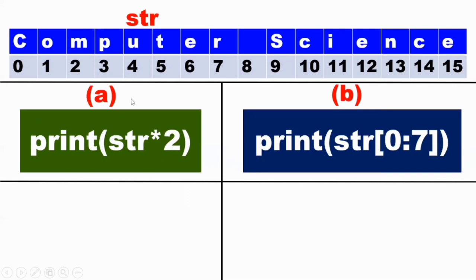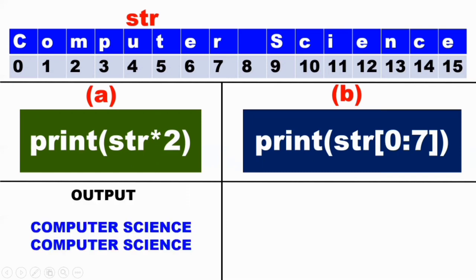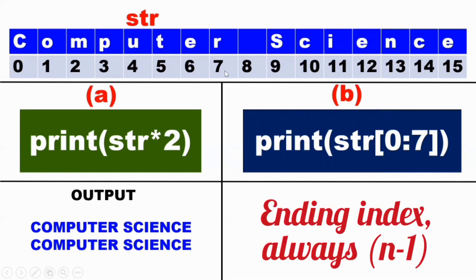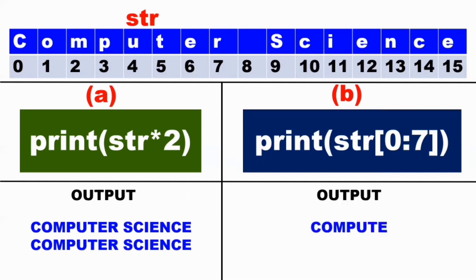STR into 2. For the second question, the starting index and ending index. The first has the starting index 0 and the ending index is 7. So the answer will be compute, not computer, compute. That is the output.